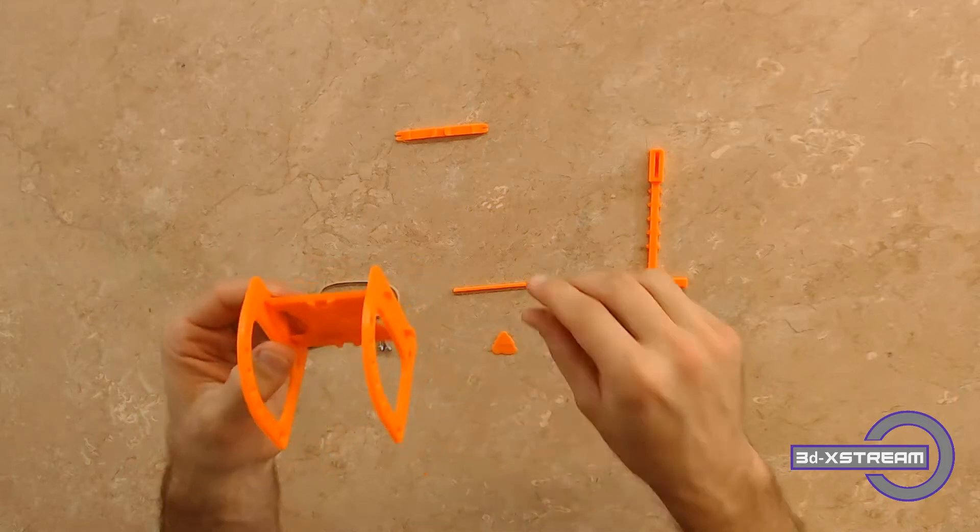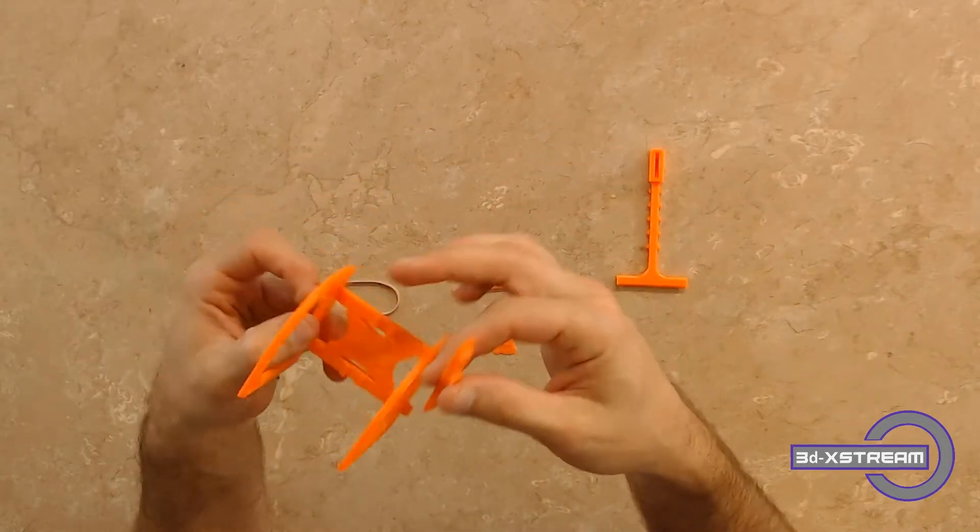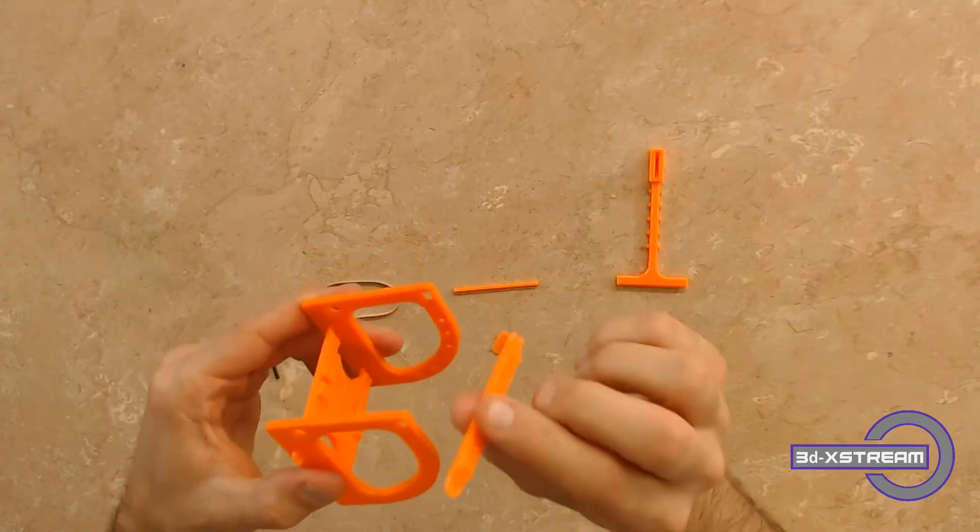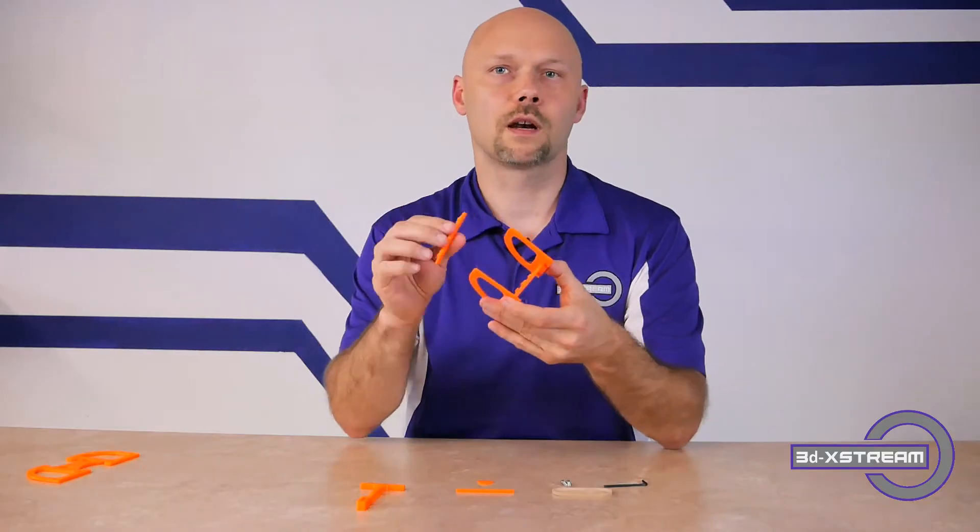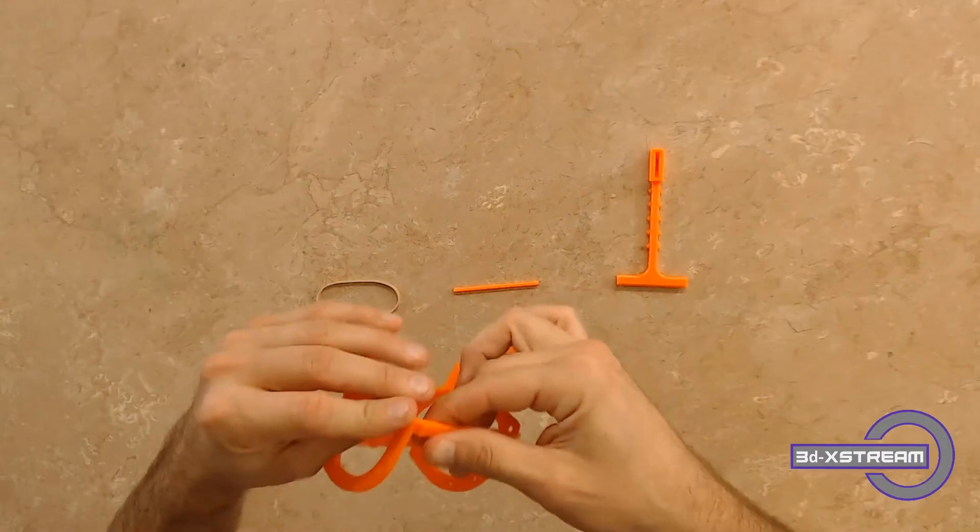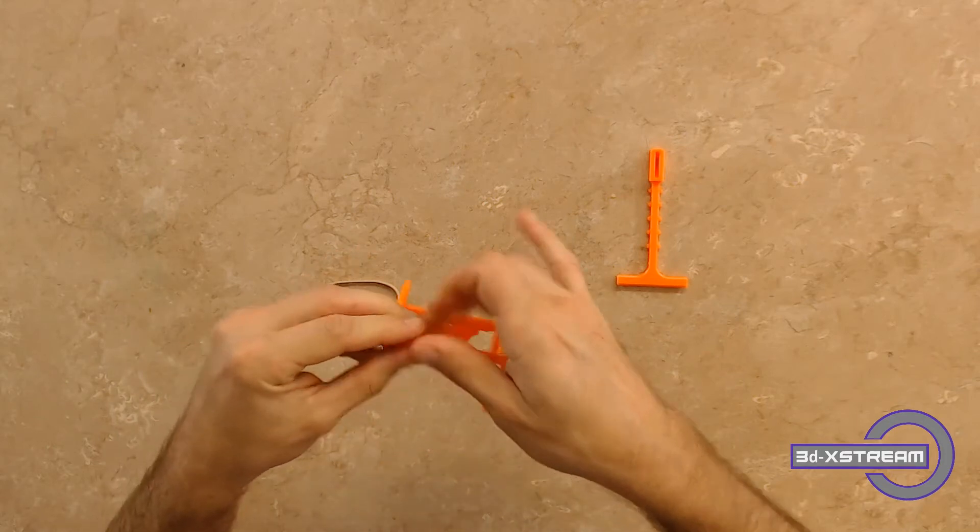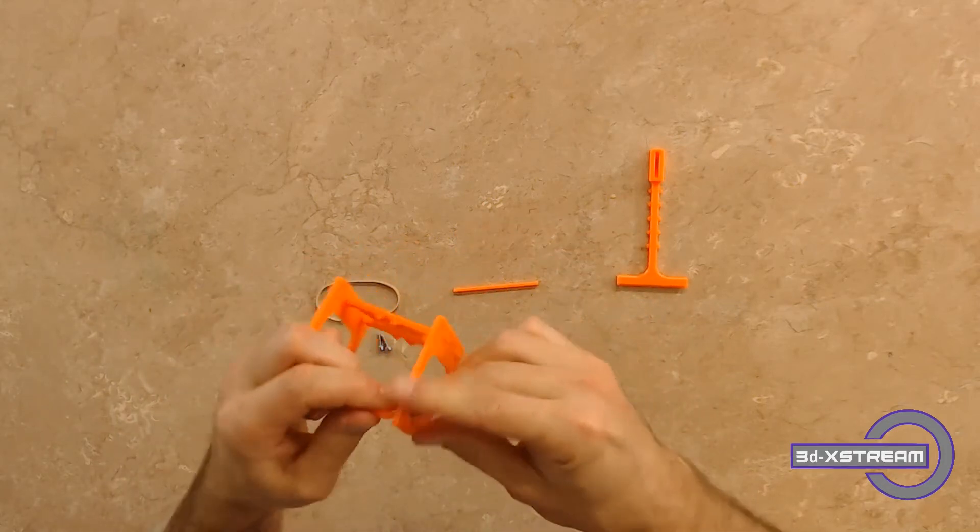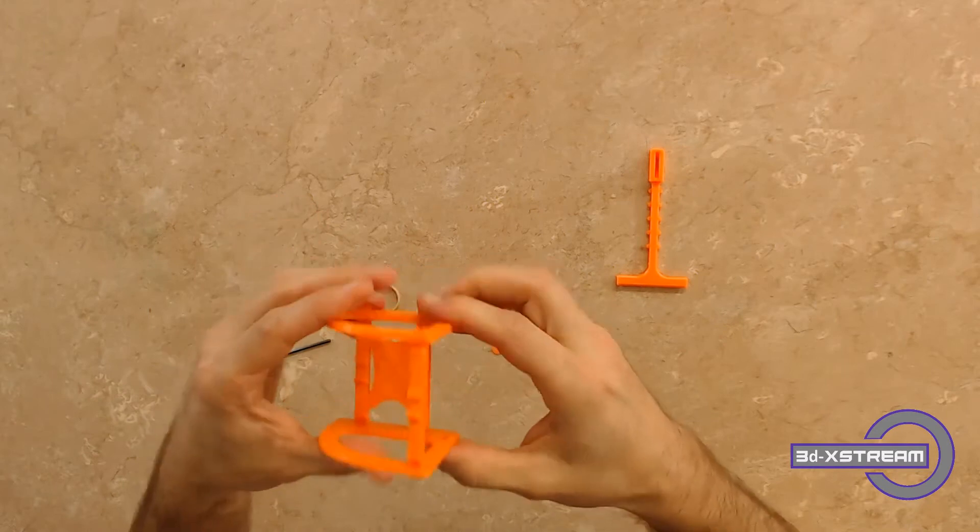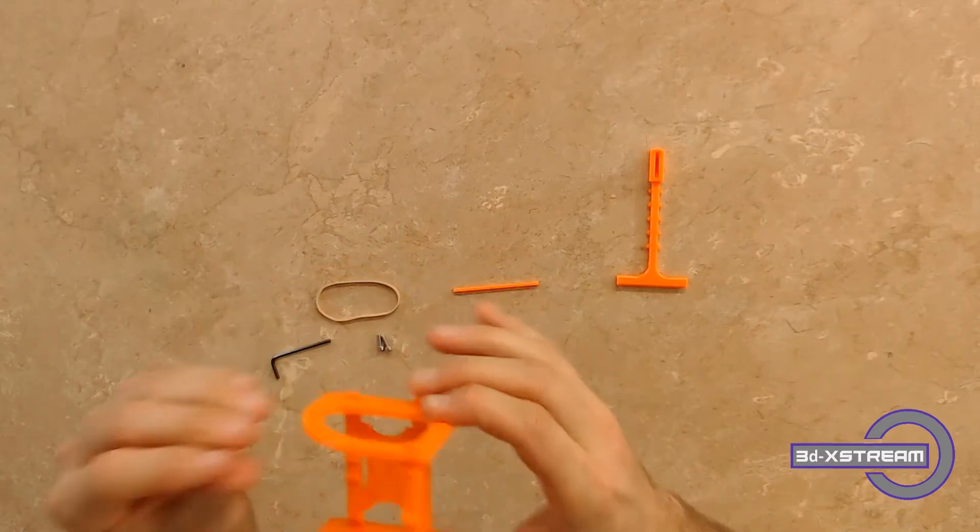Now it's still not stable because we need to put the crossbar in. The crossbar goes into the top. It really doesn't matter which way you flip it. You want to just make sure that you put one end on one side and snap the other end on the other side and that's pretty much it for the frame.